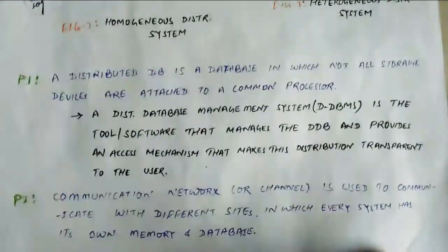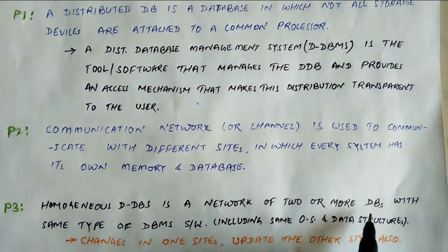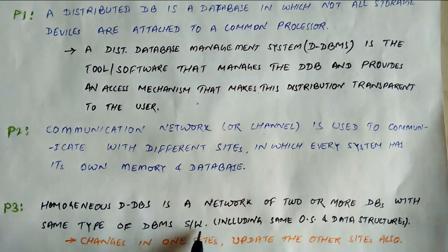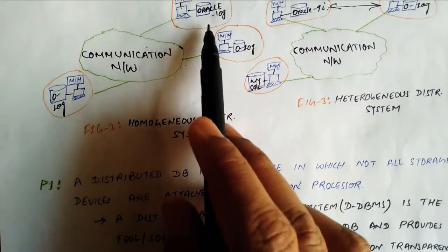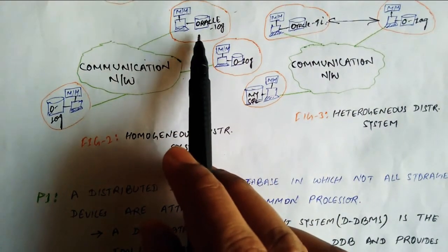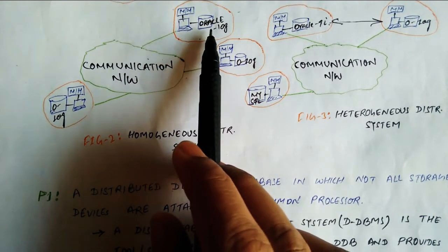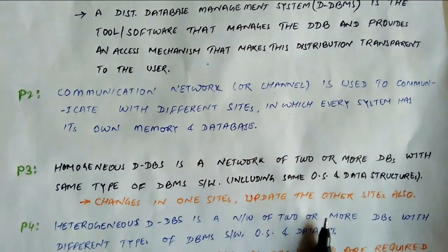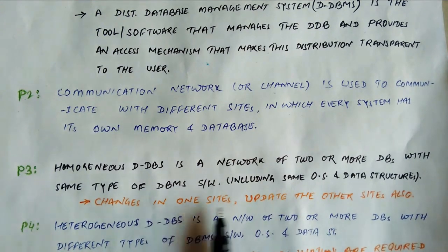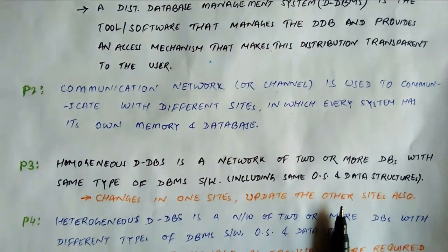In a Homogeneous Distributed System, the software, including the same operating system and data structure, are common. The software and tools such as the operating system and database management system are the same across all sites. An additional important point for the homogeneous system is that changes in one site update the other sites as well — changes on one side reflect on the remaining sides.